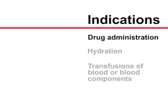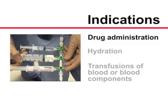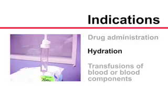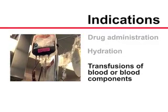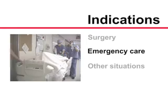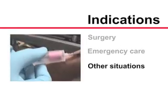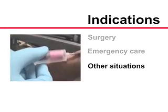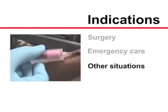Peripheral intravenous catheterization is required in a broad range of clinical applications, including intravenous drug administration, intravenous hydration, transfusions of blood or blood components, during surgery, during emergency care, and in other situations in which direct access to the bloodstream is needed.